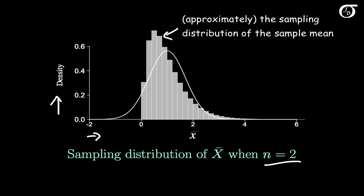In this particular case we can mathematically work out the exact sampling distribution, but here I've done it through simulation. We can see that this distribution retains some of the original distribution — we've got some right skewness, it's most definitely not normal. I've superimposed a normal curve with the appropriate mean and variance, and we can see that when n is 2, the sampling distribution of the sample mean is not normal.